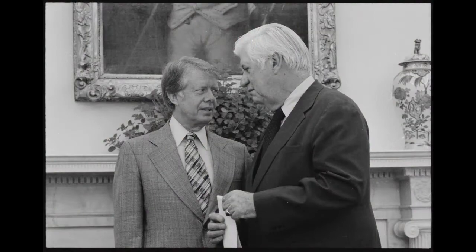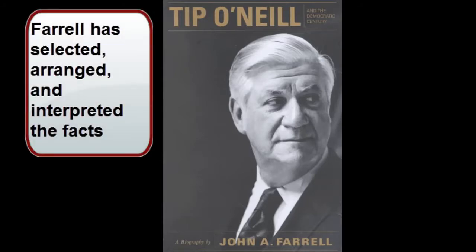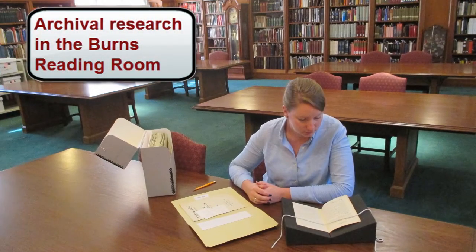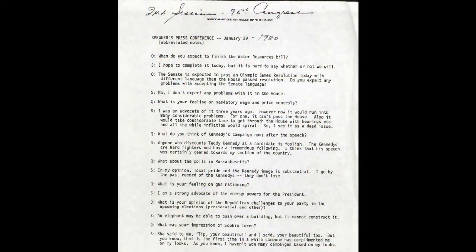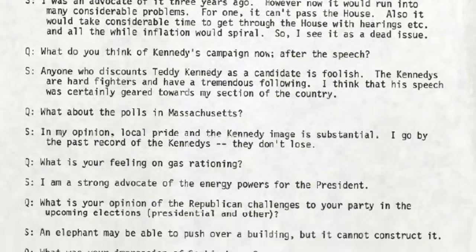Perhaps in a history class, you become interested in the role Tip O'Neill played in 20th century American politics. You could study John Farrell's book on O'Neill — as a secondary source, it would give you Farrell's perspective on O'Neill's political life. But you could also look at some of the original documents yourself. This is an excerpt of notes taken at one of O'Neill's press conferences. Because the person who took the notes was present at the conference, they are a primary source. You may find something important here that no one else has written about yet.